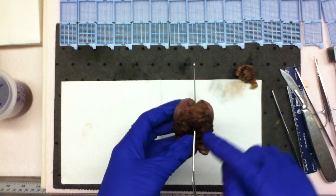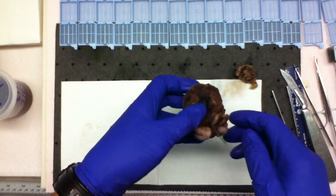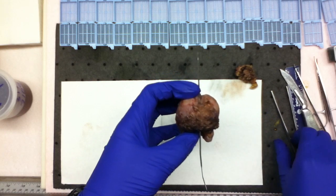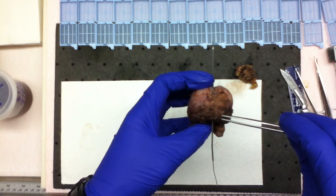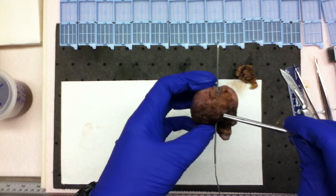Another little hint that they like to use with the robot is along the anterior side they put this stitch on there. This helps pull the prostate up out of the pelvis so they can remove it properly.